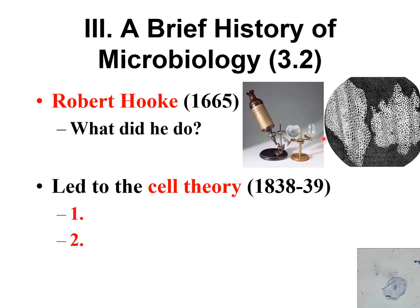It was pretty primitive, but he drew a picture of what he saw. He was looking at a piece of cork, which is dead wood, and he drew the dead plant cells that he saw. He could just see the cell walls, and that's what he drew. He actually came up with the term 'cell' because he thought they looked like the bedrooms that monks stayed in in monasteries, which they called cells.